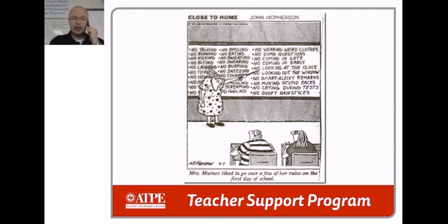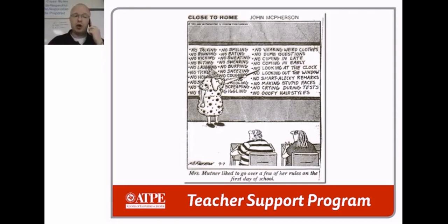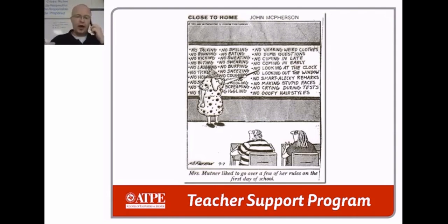Having a procedure and an expectation is a lot different than having a rule. Generally, you want to keep your rules limited to three to five — and five is a pretty high upper limit. Rules need to be overarching, umbrella-like: be respectful, be responsible, be prepared. Whereas procedures are things like the way you turn in papers, the way you write your heading, the way you walk into the classroom, or how you ask to go to the restroom or sharpen your pencil.